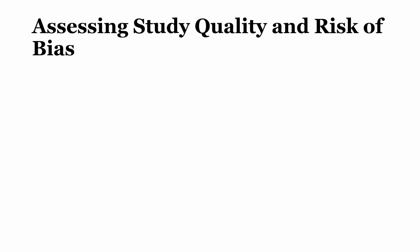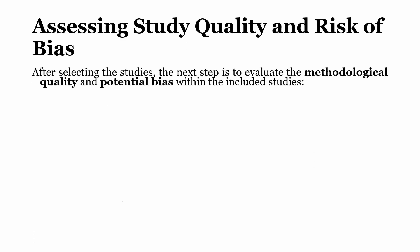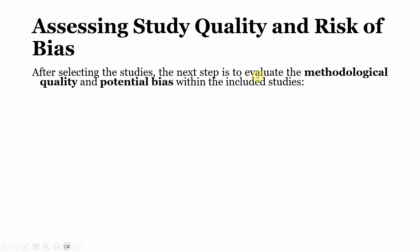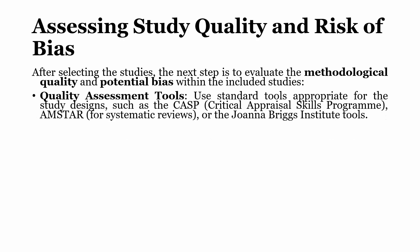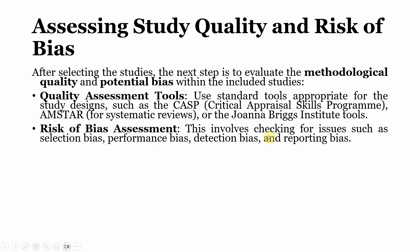Assessing study quality and risk of bias: after selecting the studies, the next step is to evaluate methodological quality and potential bias within the included studies. You can use standard quality assessment tools appropriate for the study design, such as CASP (Critical Appraisal Skills Programme), MSTAR for systematic reviews, or the Joanna Briggs Institute tools. Risk of bias assessment involves checking for selection bias, performance bias, detection bias, and reporting bias.